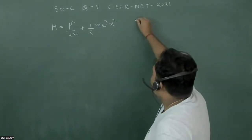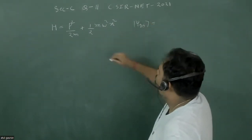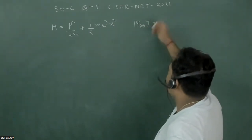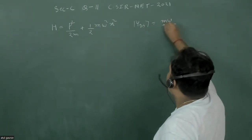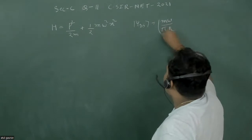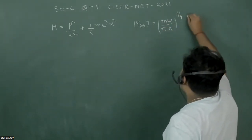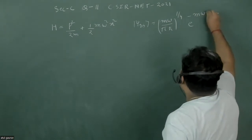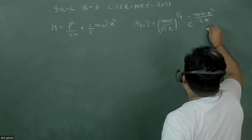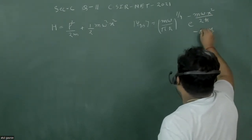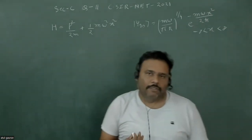The ground state normalized wave function is: (m omega / pi h-bar) to the power 1/4, times e to the power minus m omega x squared upon 2 h-bar, where x varies from minus infinity to plus infinity. This is our original system with the particle in the ground state.